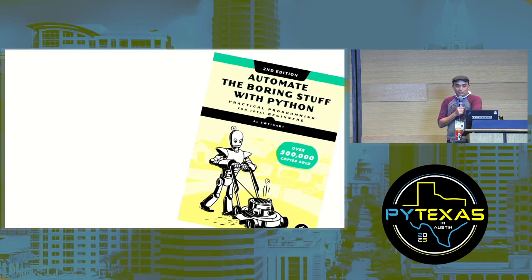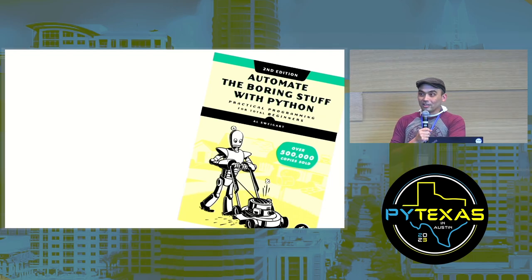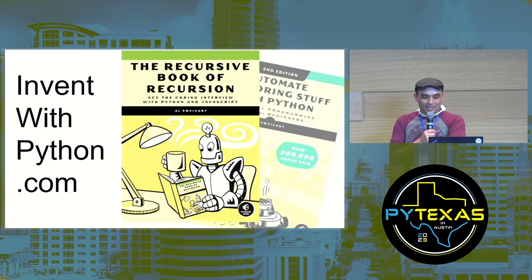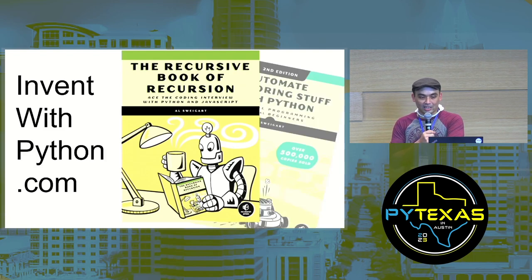My name is Al Sweigart. I'm mostly known as the author of Automate the Boring Stuff with Python, but I have a new book out now: The Recursive Book of Recursion. You can read it for free under a Creative Commons license on my website, inventwithpython.com.